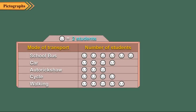Observe this pictograph. The title of this pictograph is Modes of Transport Used by Students. Also, the key of this pictograph is one smiley is equal to two students. It means each symbol of smiley represents two students.